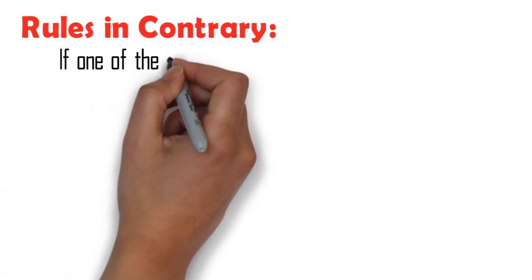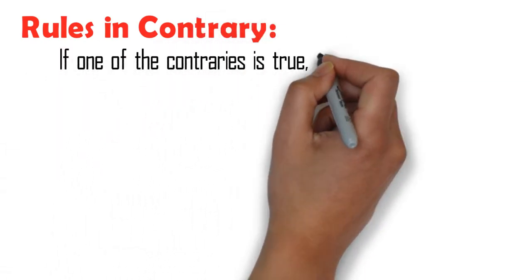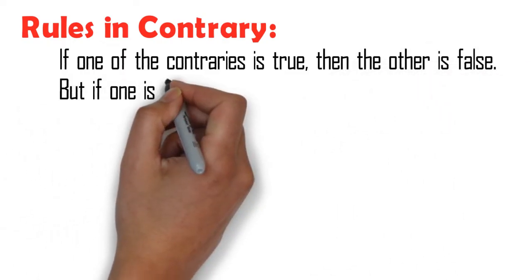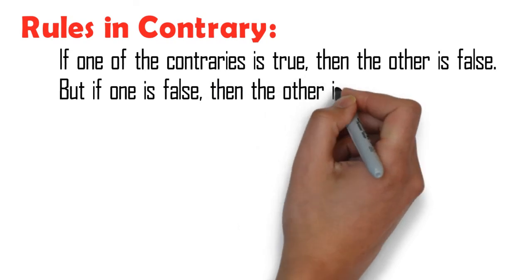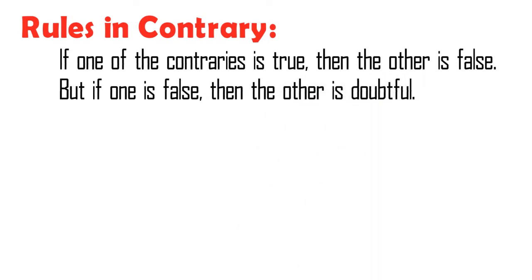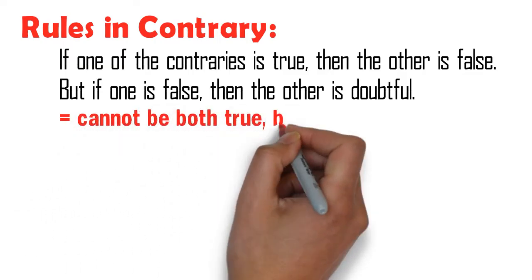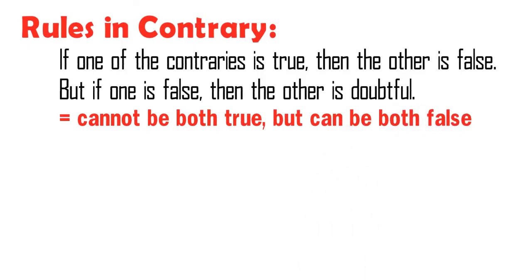Rules in contrary. If one of the contraries is true, then the other is false. But if one is false, then the other is doubtful. That is, its truth value cannot be determined. This is because contraries cannot be both true, but can be both false.